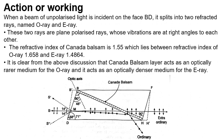When a beam of unpolarized light is incident on face BD, it splits into two refracted rays: the O ray and the E ray. These two rays are plane polarized with vibrations at right angles to each other. The refractive index of Canada balsam is 1.55, which lies between the refractive index of the O ray (1.658) and the E ray (1.4864). Thus, Canada balsam acts as an optically rarer medium for the O ray and an optically denser medium for the E ray.